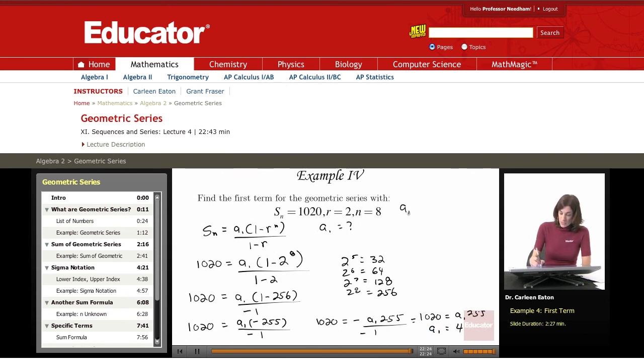So I was asked to find the first term and I found that using the sum formula requiring the first term, the common ratio, and the number of terms. And I determined that the first term in this geometric series is actually 4.